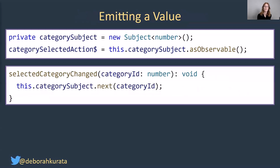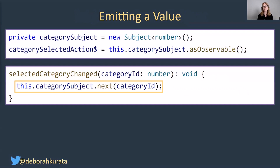So once we have our action stream, how do we get a value into it? We emit a value using next. So we use this.categorySubject.next and define whatever we want to be emitted into that stream — in this case, a category ID.